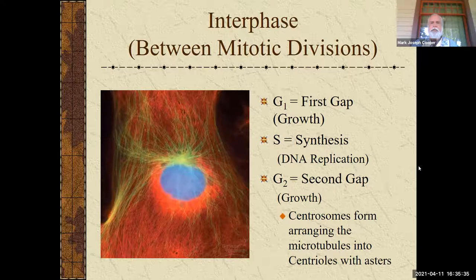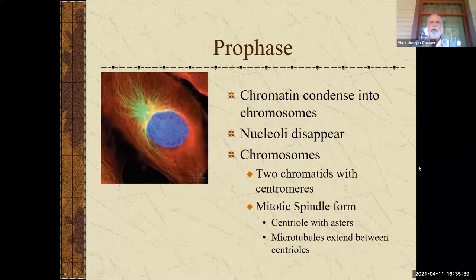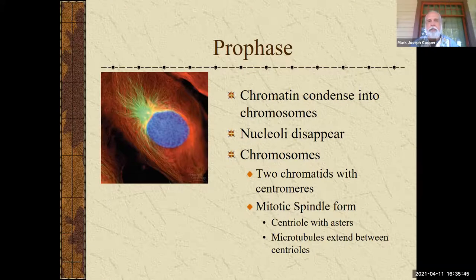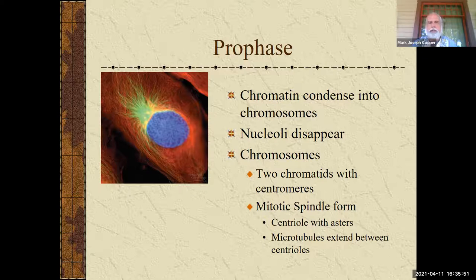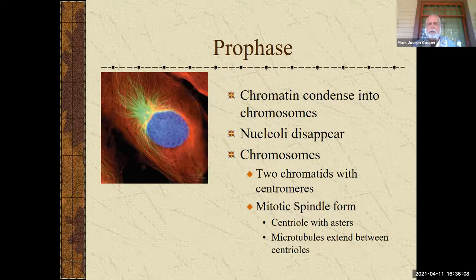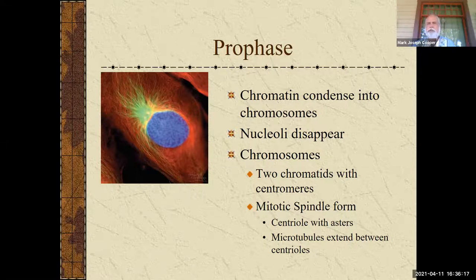The next phase is prophase, which is the longest phase of the M phase of mitosis. Here, the chromatin condenses into chromosomes, so you can start to see those chromosomes. The nucleoli disappear — you cannot physically see them anymore. The chromosomes are made up of two chromatids with their centromeres, and the mitotic spindle forms, which has the centrioles and asters, plus microtubules extending between the centrioles forming the spindle apparatus.